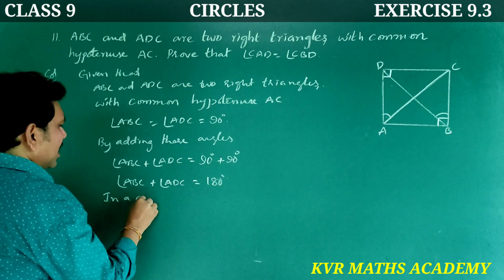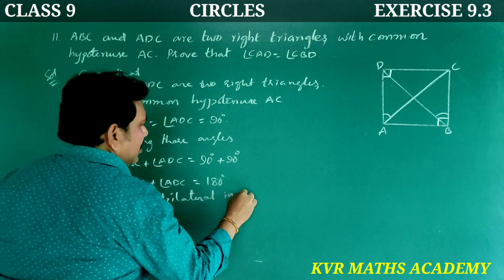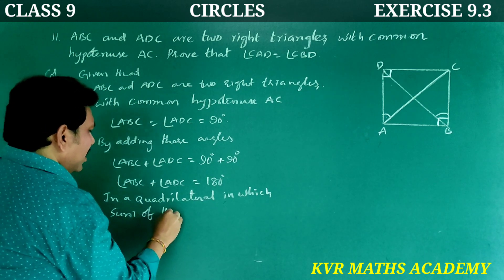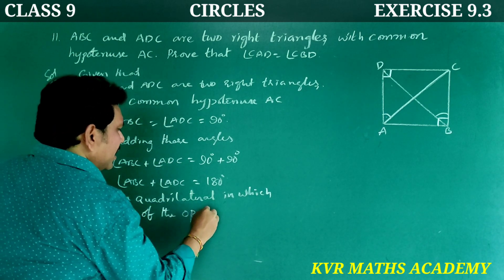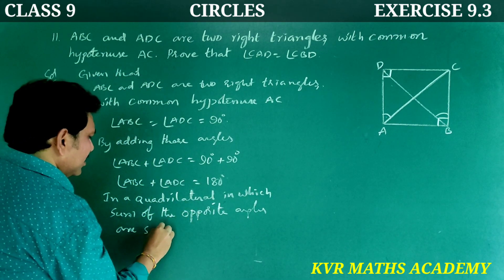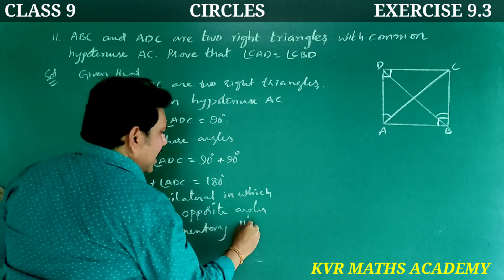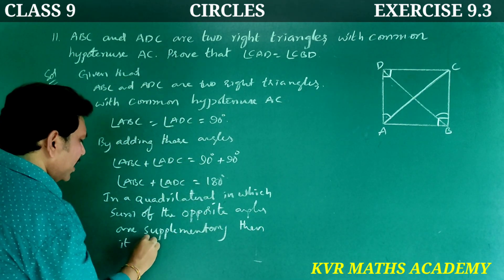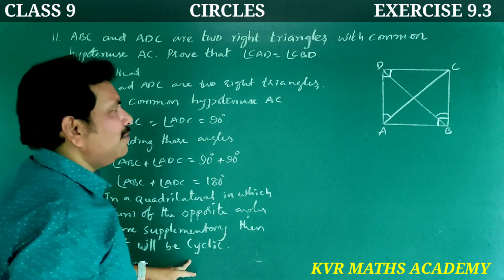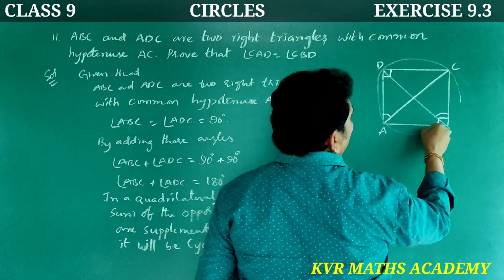In a quadrilateral in which the sum of the opposite angles is supplementary, then it will be cyclic. Therefore ABCD is a cyclic quadrilateral.